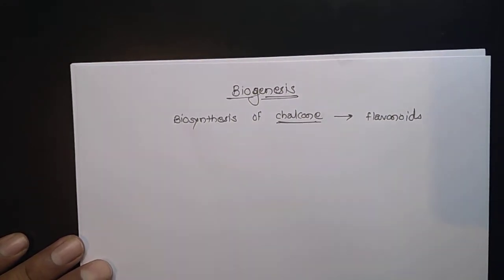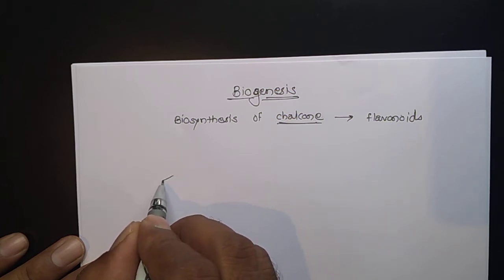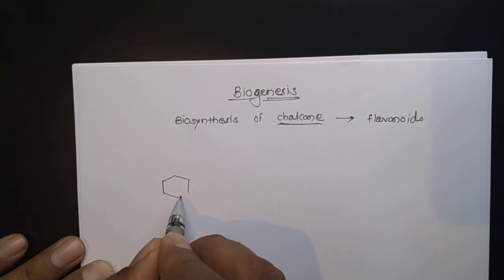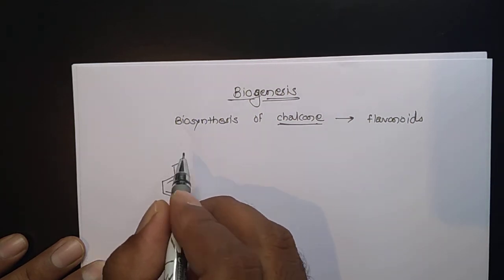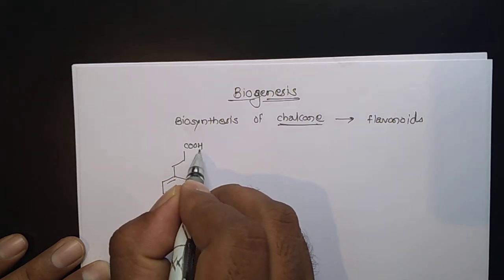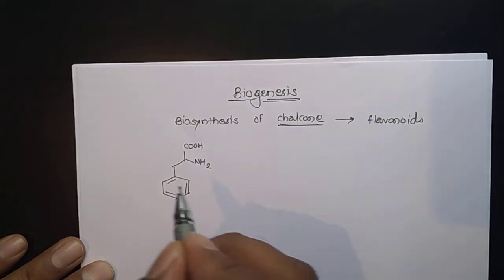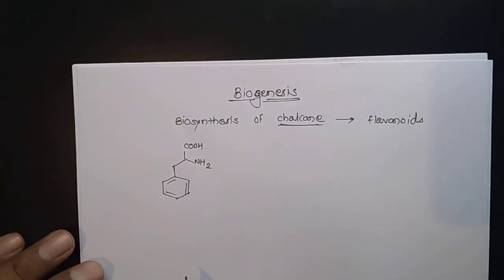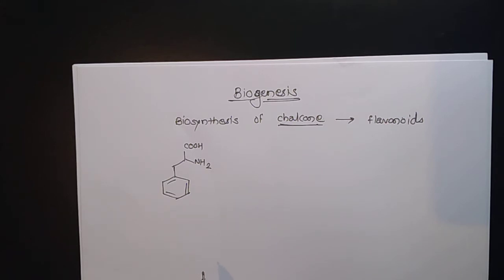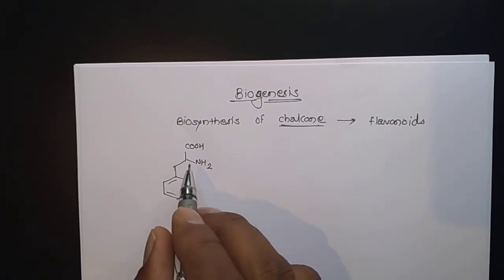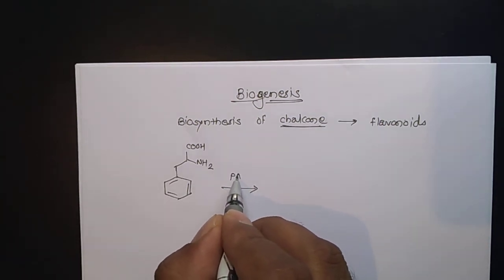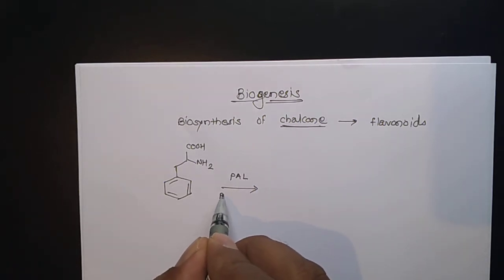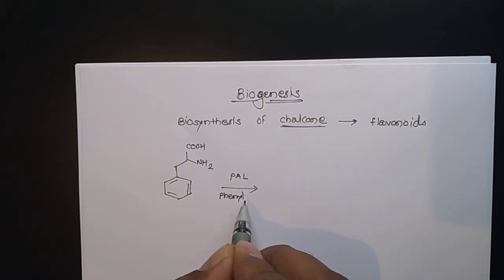Our starting material for chalcone — I hope you will recognize this compound. This is again an aromatic amino acid, and the amino acid here is phenylalanine.